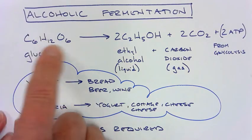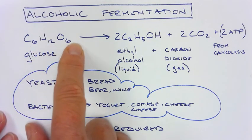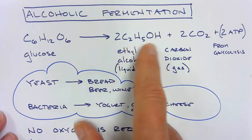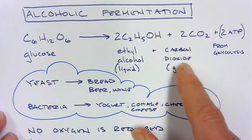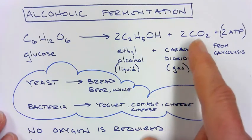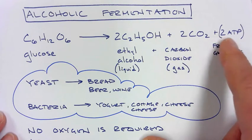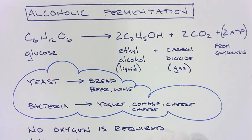Again, they both start with glucose, C6H12O6, and they are reduced into either ethyl alcohol, and a byproduct is carbon dioxide. That carbon dioxide is what makes bread have all those nice nooks and crannies. And again, we have a net gain of 2 ATP. In this scenario, no oxygen is required. It is completely anaerobic.